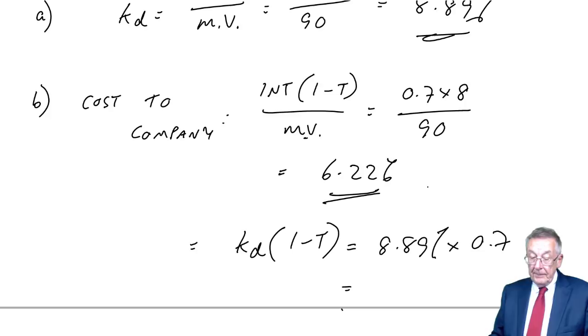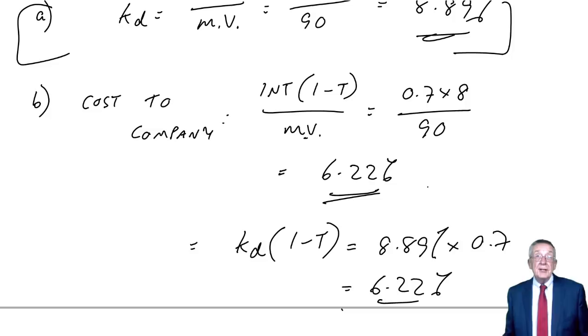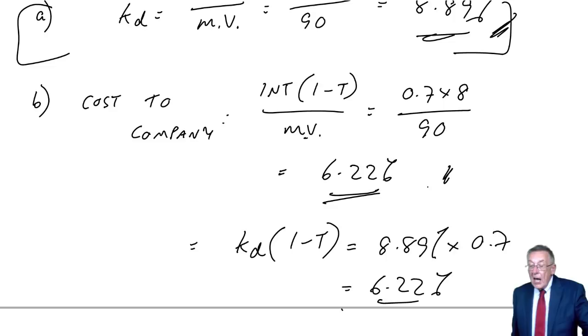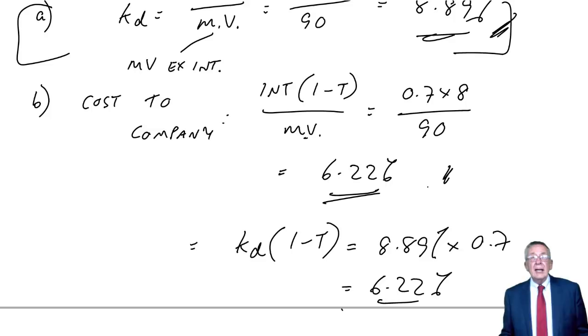However, I've already said it is very unlikely that you'd be actually asked for the return to the investors. Normally, all that's ever required is the cost of the company, so it makes more sense to go straight to it. Secondly, the market value, just as with equity, we take the market value ex interest. It's the market value, assuming they've just paid this year's interest. And we always assume that, unless you're told differently. But just as with equity, although terribly unlikely in the exam, if you are told they're about to pay interest, it's cum interest, then, just as with equity, you would subtract the interest about to be paid.